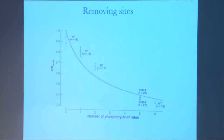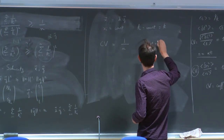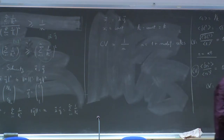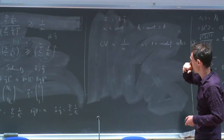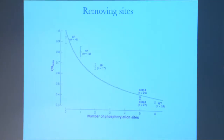You can see that the more you remove sites, the more you increase the CV. This is exactly the intuition we have: the more intermediate states you have, the more reproducible you are. Even better, they fit the CV with 1 over N, where N is one plus the number of modification sites, since the modification sites act as intermediate states plus the first state. They plotted 1 over N+1 and it's not perfect, but qualitatively it really goes the right way.